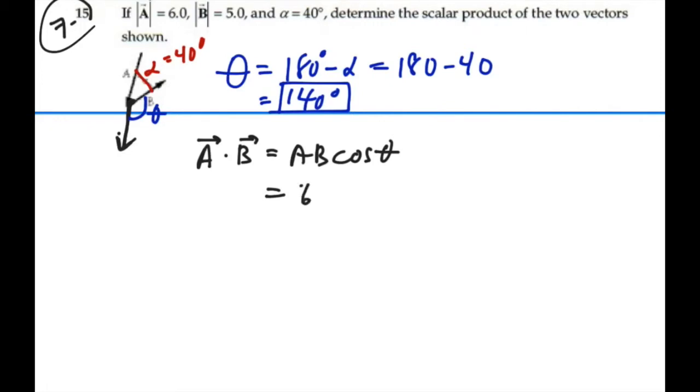And this is 6 times 5 cosine 140 degrees. 30 times the cosine of 140 is negative 22.98, so it's negative 23.0.